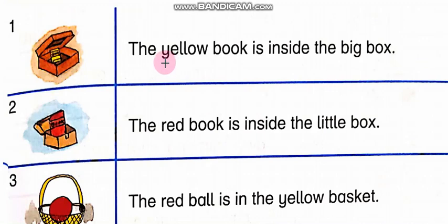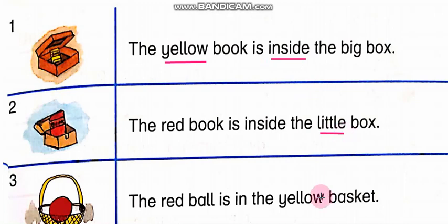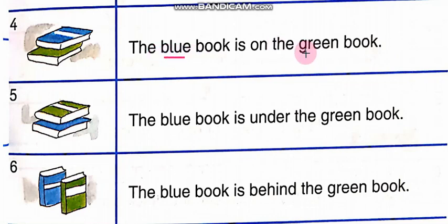Students, dictation. Y-E-L-L-O-W: Yellow. I-N-S-I-D-E: Inside. Inside means under. L-I-T-T-L-E: Little. Little mean chota. B-A-S-K-E-T: Basket. Basket mean toki. Red. B-L-U-E: Blue. G-R-E-E-N: Green.